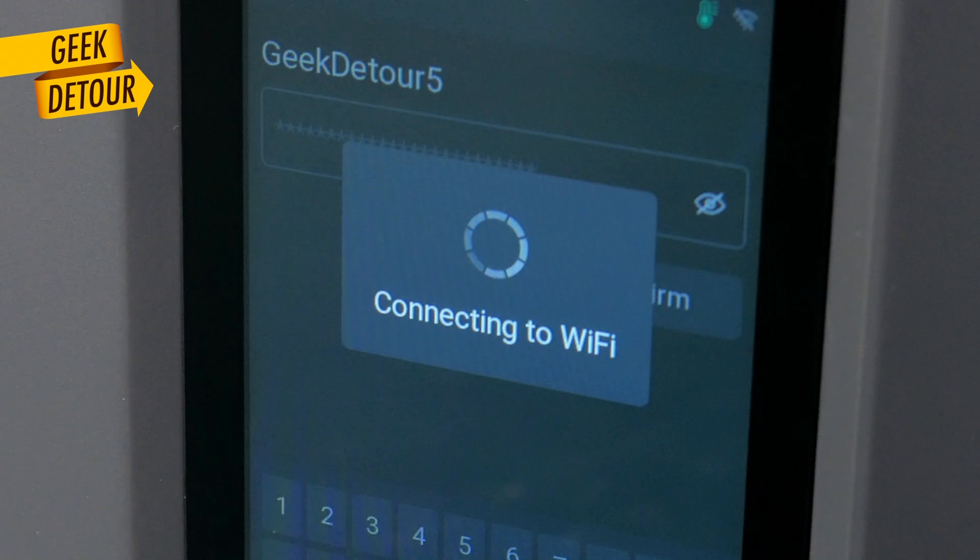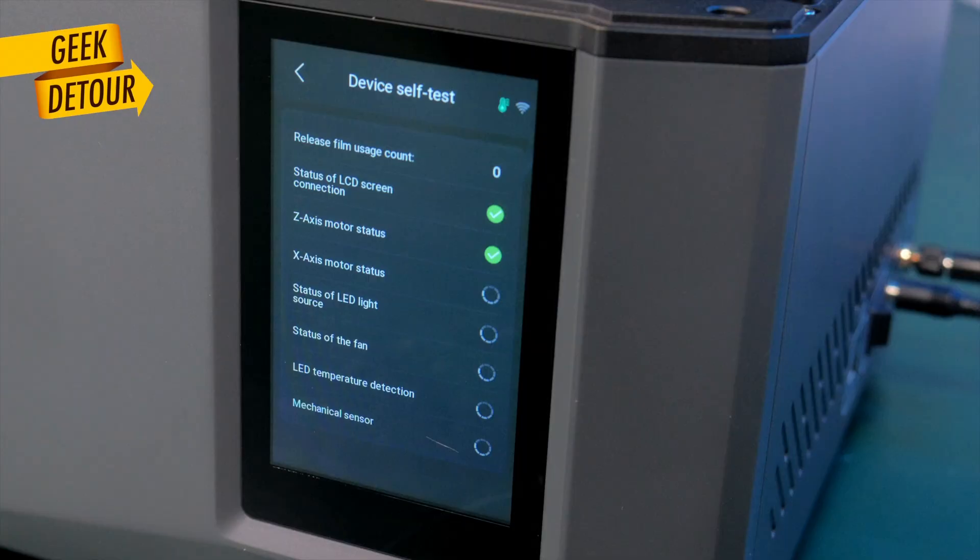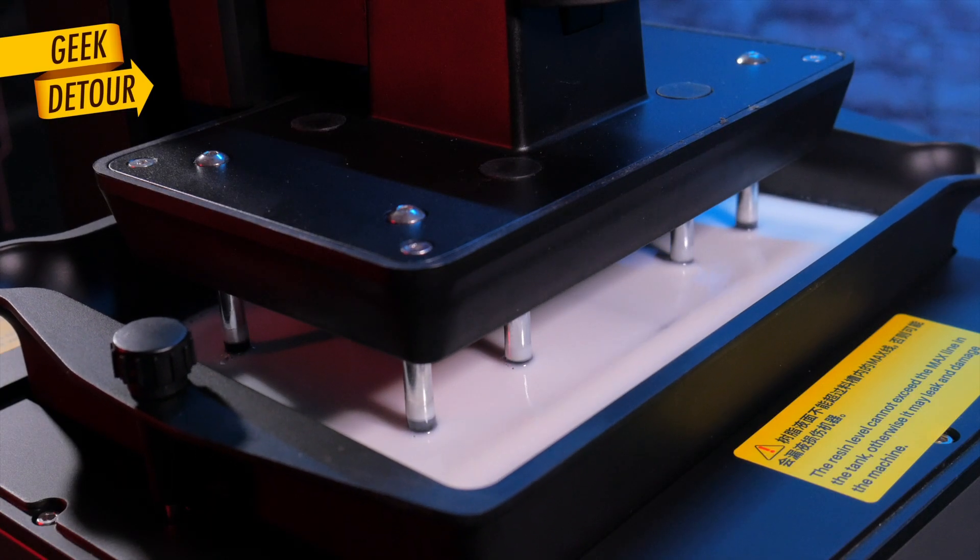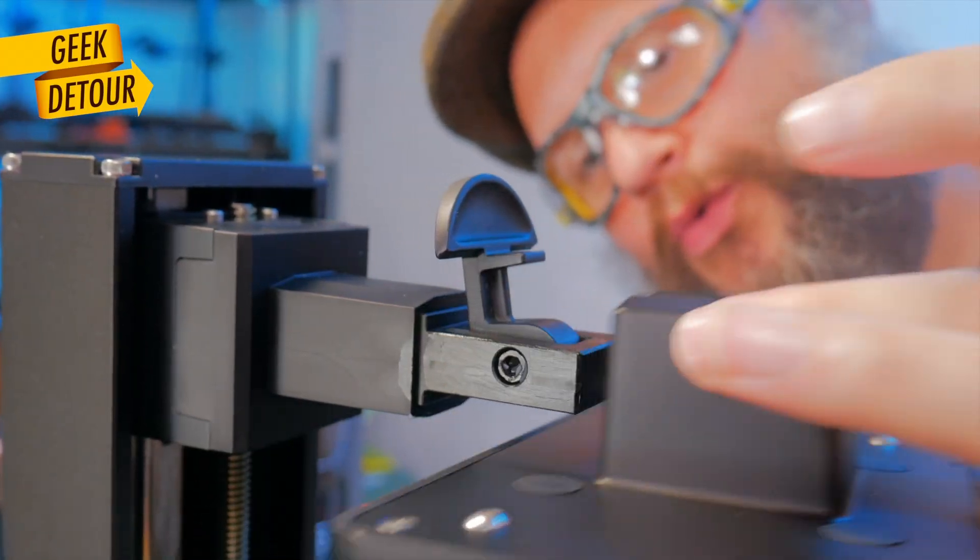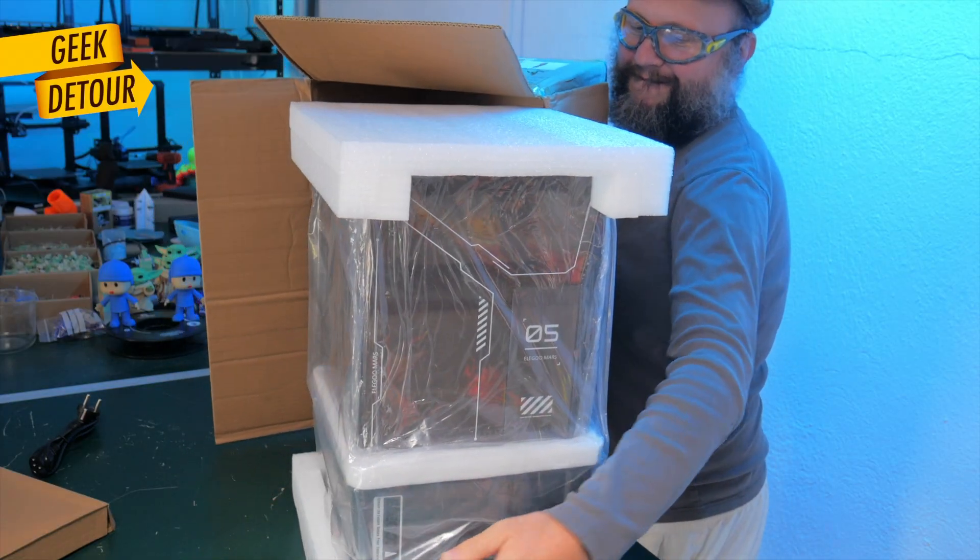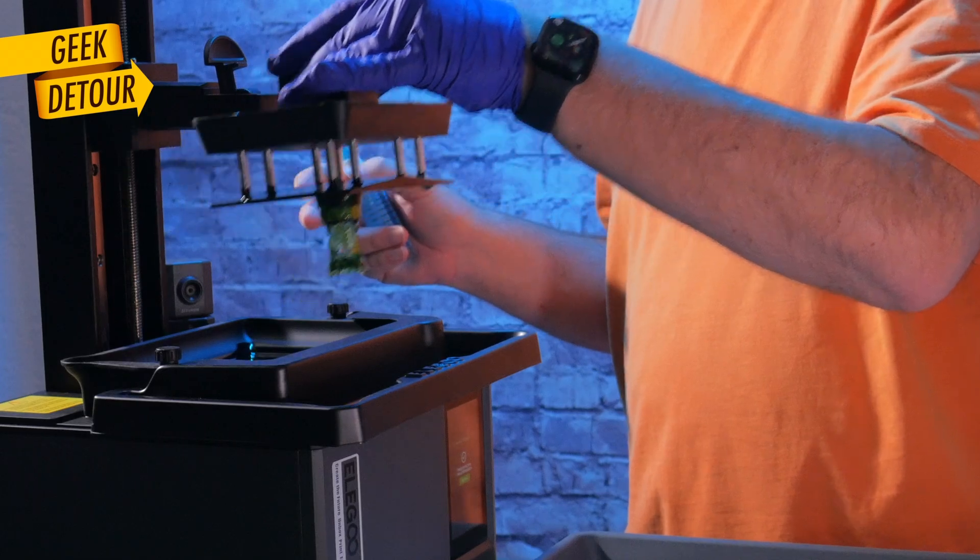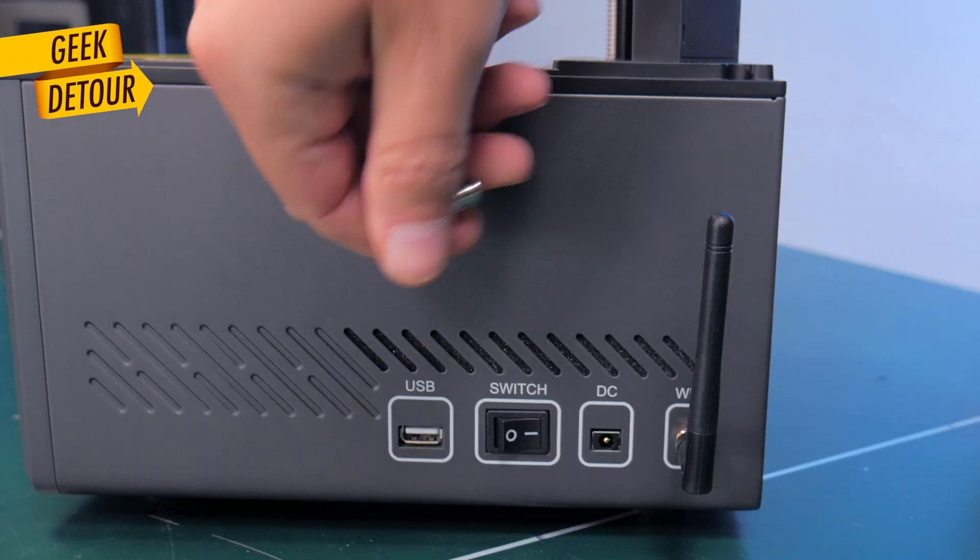But the important stuff is the same. Wi-Fi, camera, smart sensors, tilt release, the awesome latch. Just like the Saturn 4 Ultra, I took it out of the box and it printed fine. The construction is mostly metal.